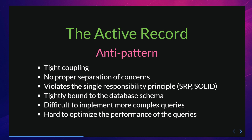Additionally, the active record pattern can also make it harder to implement more complex business logic, as the objects are tightly bound to the database schema. Another drawback is that it can make it difficult to implement more complex queries using the methods and properties provided by the ORM. This can also make it difficult to optimize the performance of the queries, as this pattern is mainly intended for CRUD operations and simple use cases.